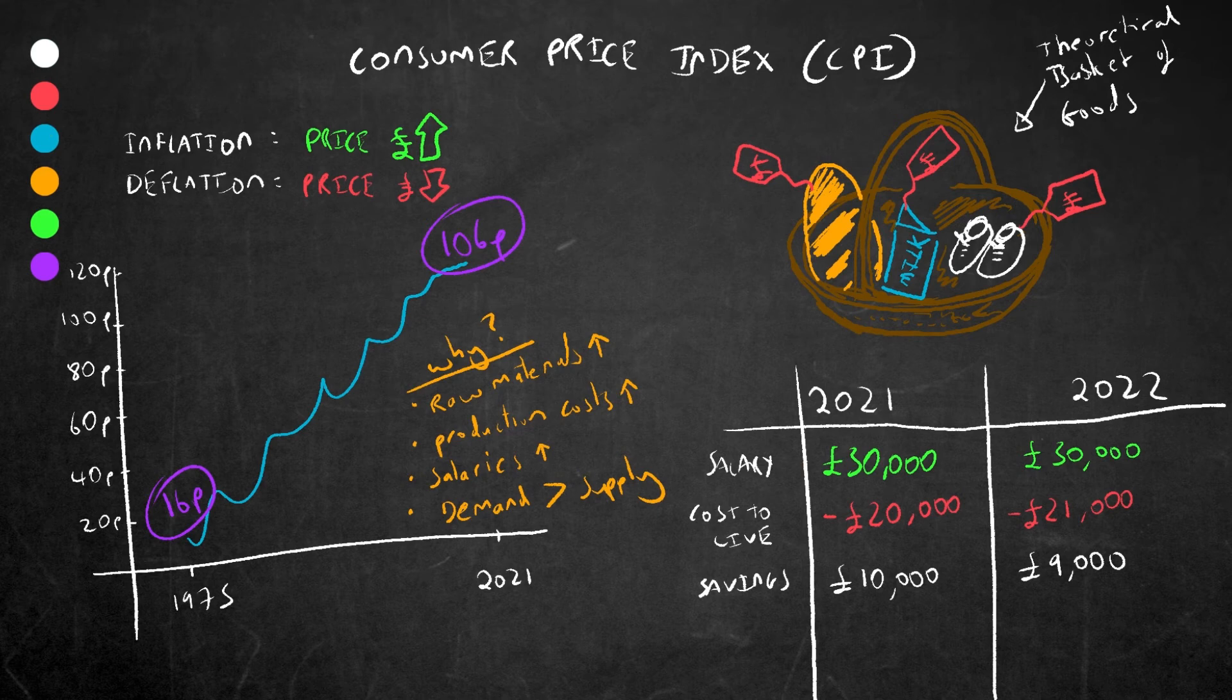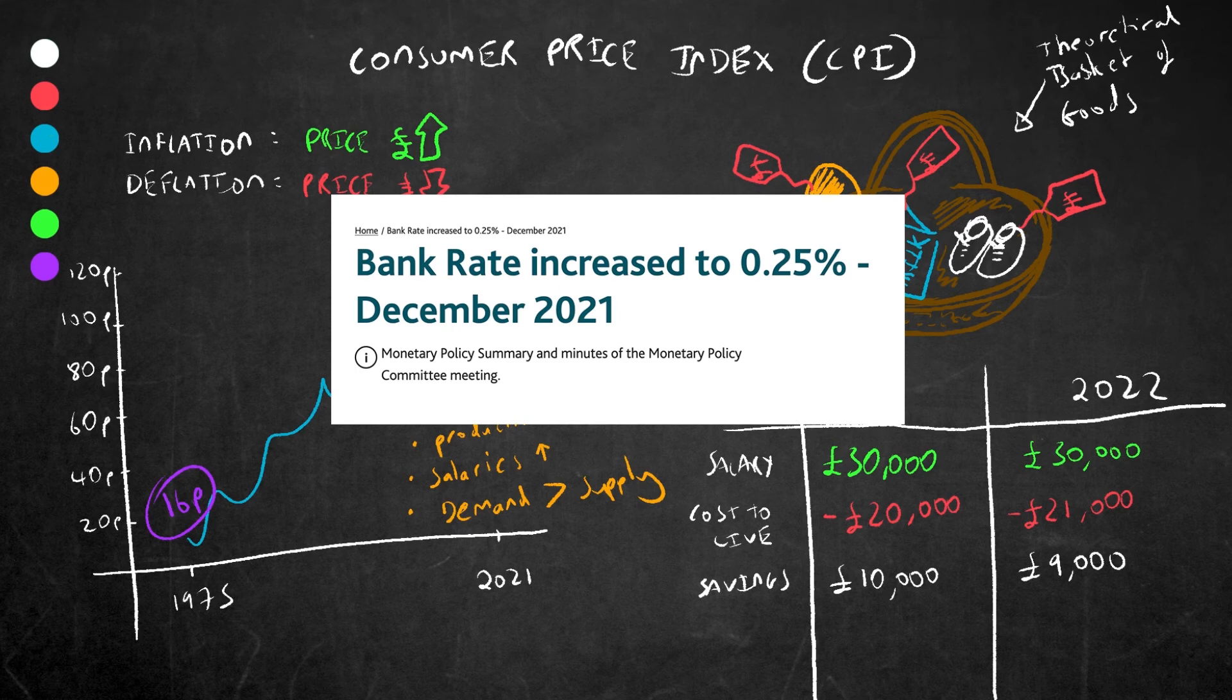So what has the government done? Well, in order to try and lessen the effects of inflation, two days ago, the Bank of England decided to raise interest rates to 0.25% from its all-time low of 0.1%. So what does this do?